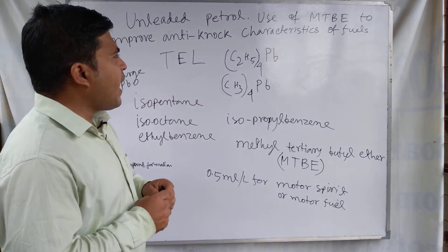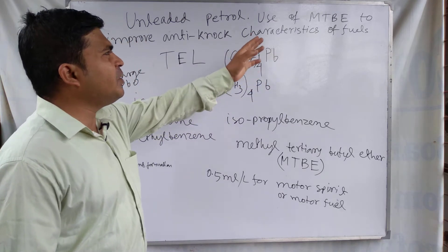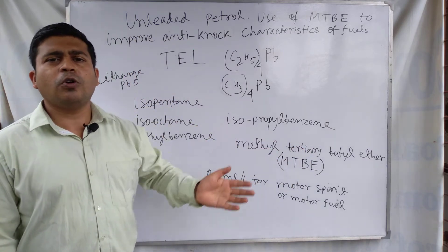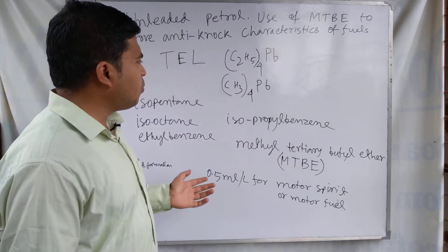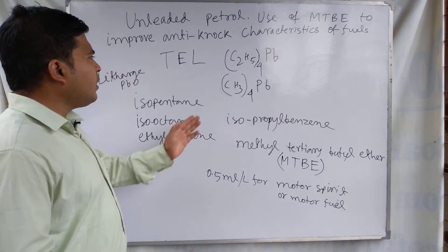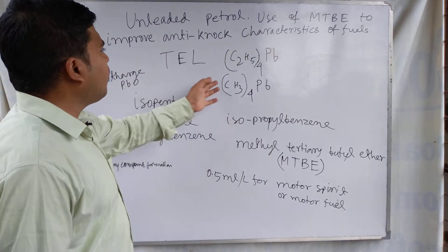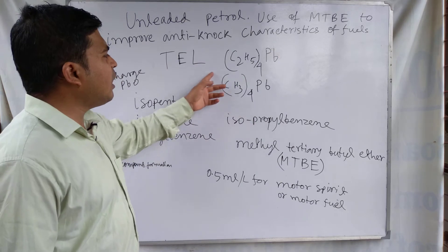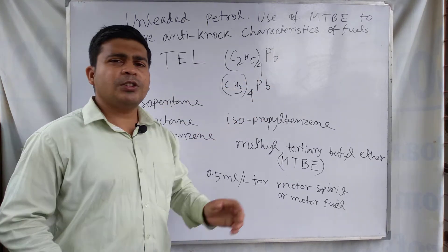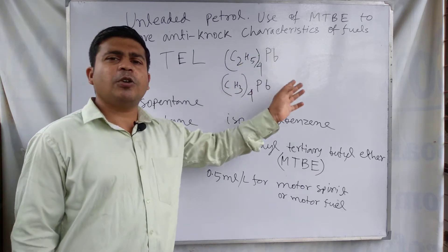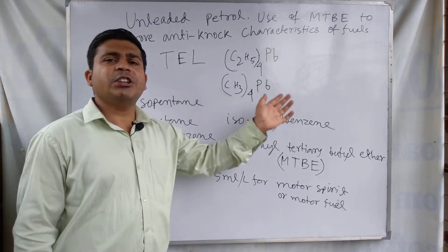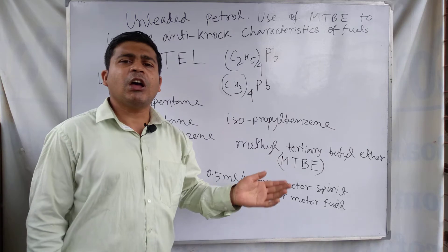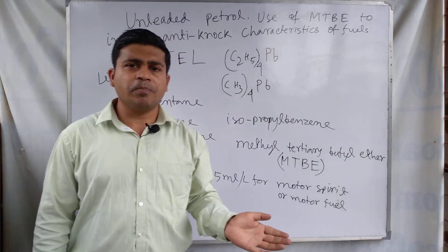Before understanding the use of MTBE in gasoline, we need to understand TEL as an anti-knocking agent. Tetraethyl lead or tetramethyl lead — these types of compounds are used as anti-knocking agents in internal combustion engine fuel to increase the octane number or octane rating of the fuel.